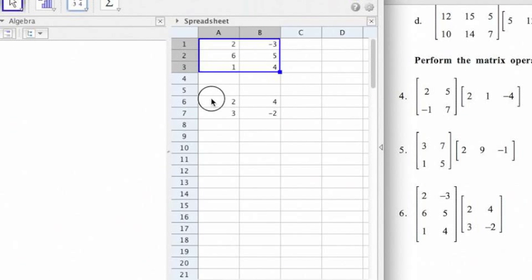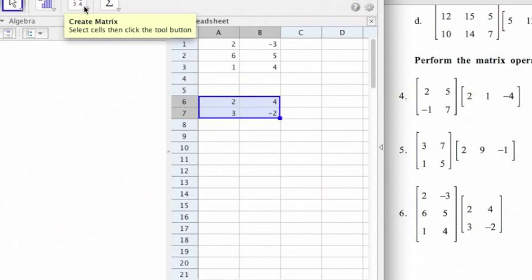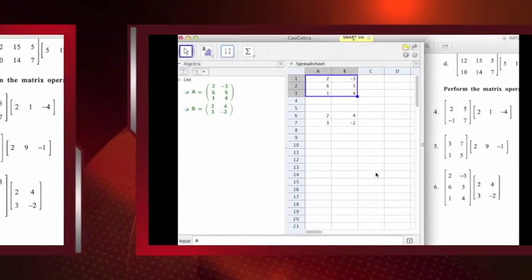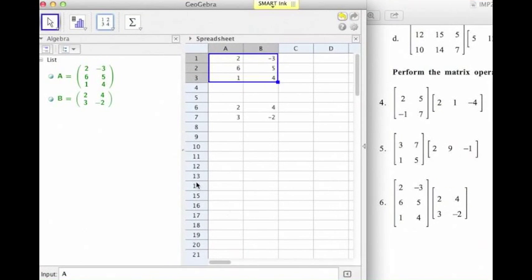I'm going to do the same thing for the second matrix, and this one I'm going to name matrix B. So now I have my two matrices.